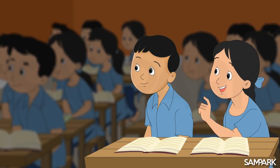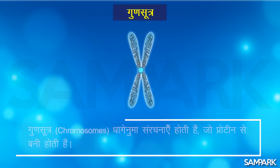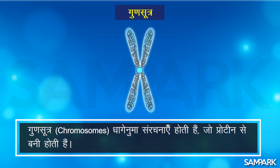गुण सूत्र? वो क्या होते हैं दीदी? बच्चों, गुण सूत्र जिन्हें अंग्रेजी में क्रोमोसोम्स कहते हैं, धागे नुमा संरचनाएं होती हैं जो प्रोटीन से बनी होती हैं। ये गुण सूत्र प्रत्येक कोशिका के केंद्रक में पाए जाते हैं।